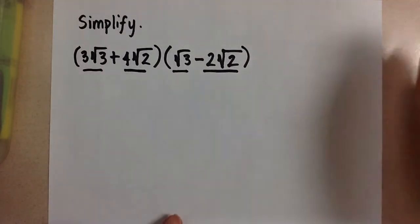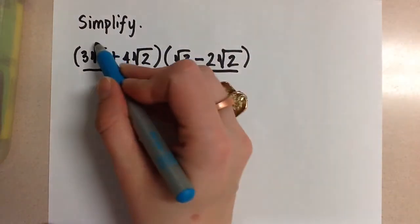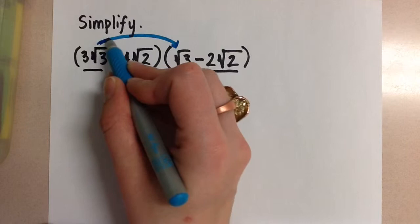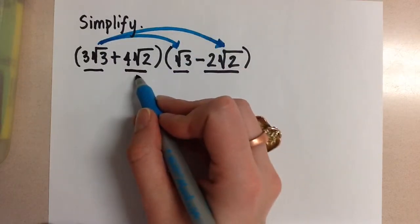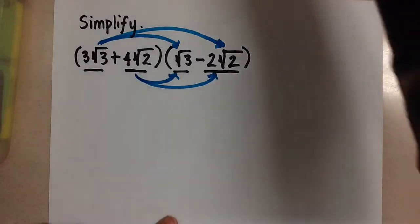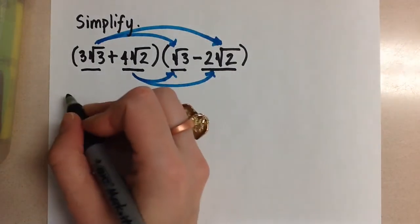And to multiply this properly we need to use our distributive property and make sure that this first term gets multiplied with both terms in the second set of brackets and then the second term gets multiplied with both terms in the second set of brackets as well. So let's go ahead and do that first.